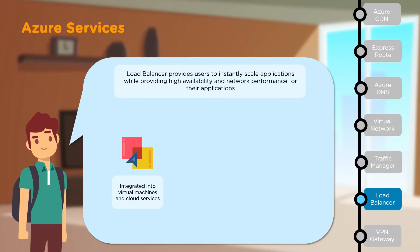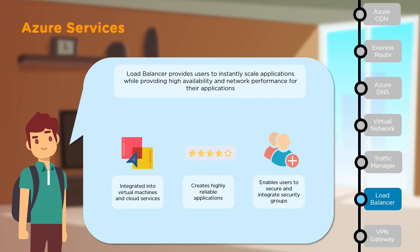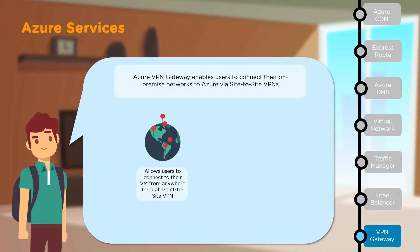Next, we have Load Balancer, which provides the ability to instantly scale applications while delivering high availability and improved network performance. It can be integrated into virtual machines and cloud services, provides highly reliable applications, and allows users to secure and integrate security groups. Finally, we have Azure VPN Gateway, which allows users to connect their on-premises networks to Azure using a site-to-site VPN, connect virtual machines to anywhere in the world through a point-to-site VPN, and is very easy to manage and highly available.